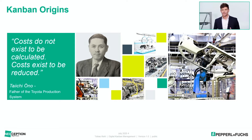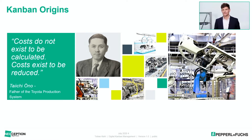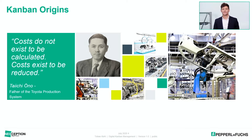He needed to find a better concept. He visited a supermarket and realized the concept they used to replenish what was consumed was really nice — only reproduce what was consumed. He thought this was a perfect fit for the shop floor. That's why these racks are also called supermarket racks, in honor of Taiichi Ohno. One of his famous quotes: 'Costs do not exist to be calculated, but costs exist to be reduced.' Everything we now know about lean management and lean startup by Eric Ries was based on his first ideas.